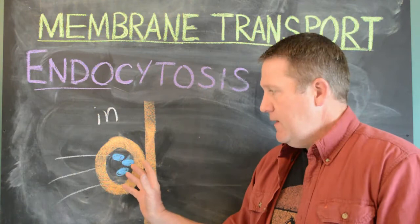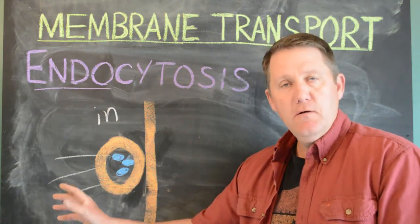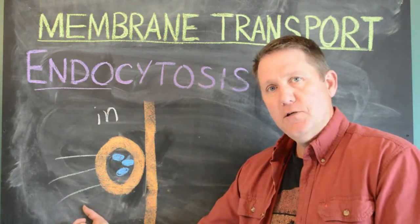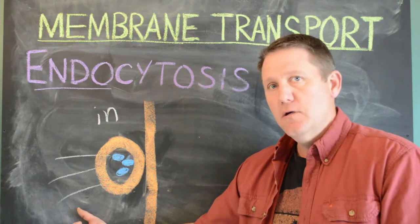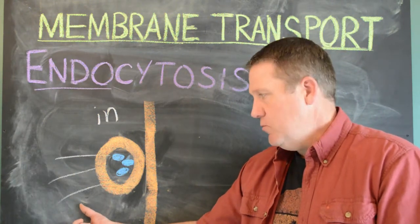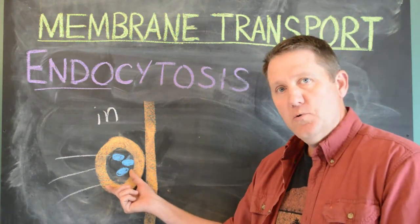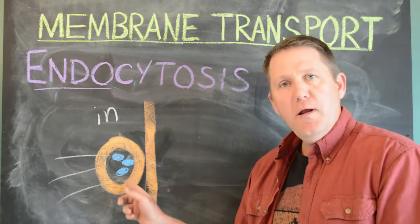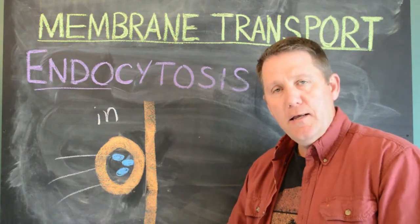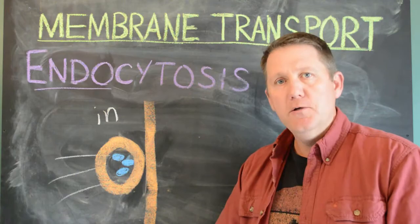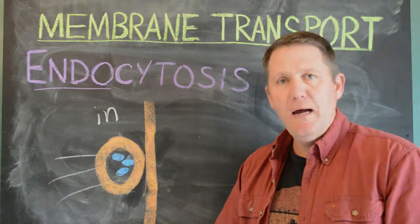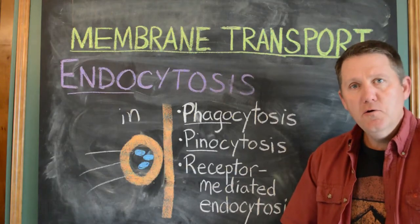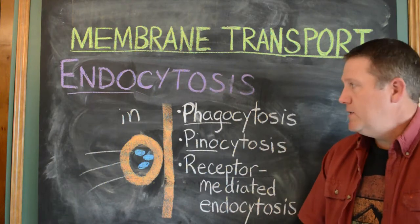The objects are now inside a vesicle and can be moved around inside the cell. Very often, another vesicle full of digestive enzymes — called a lysosome — will merge with this one and digest whatever's inside, freeing up those biomolecules to be used by the cell. There are three basic types of endocytosis; let's take them one at a time.